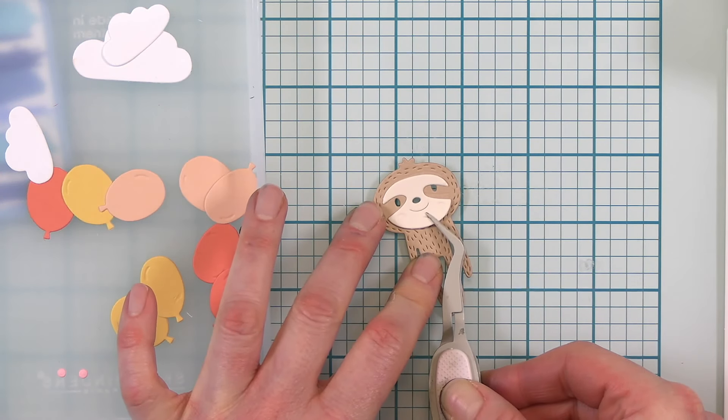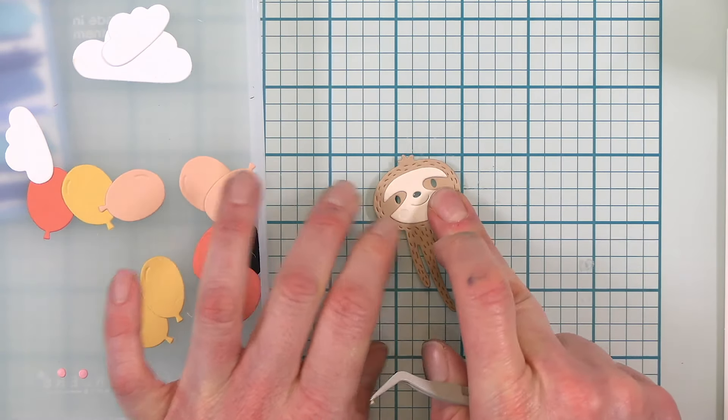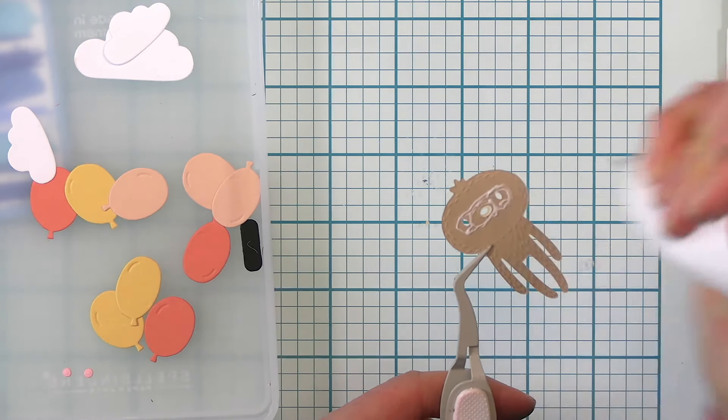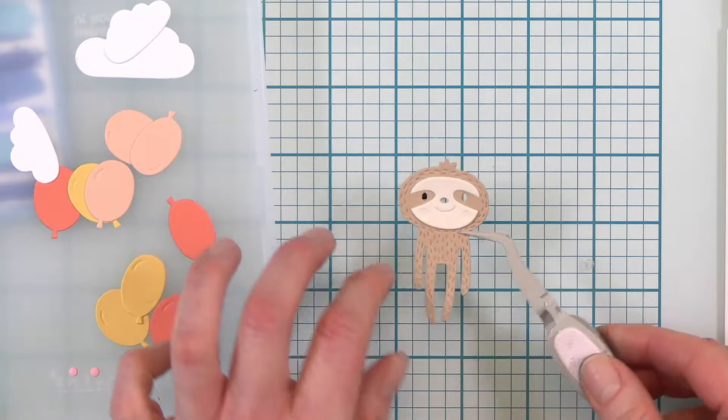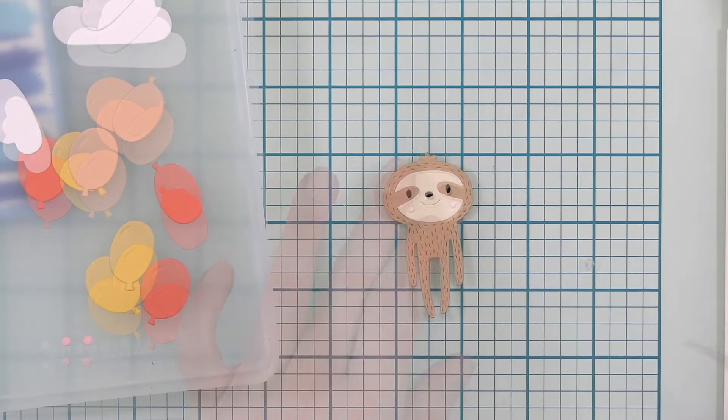So I've chosen the sloth and I cut him out in a tan paper from Spellbinders and I'm just putting on his face there in a lighter ivory paper. Then I'm backing his eyes with this little piece which I cut out of black.